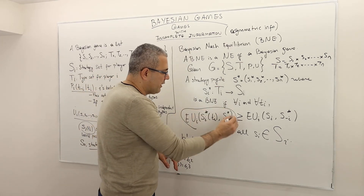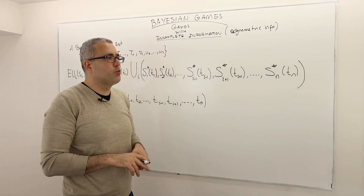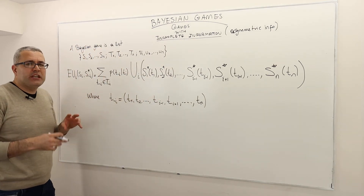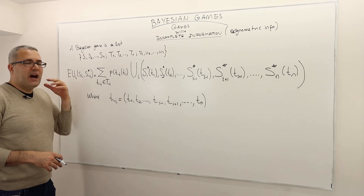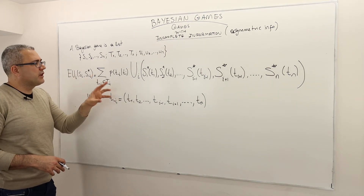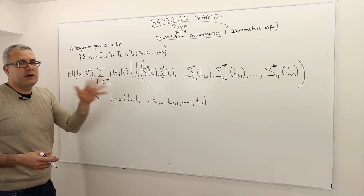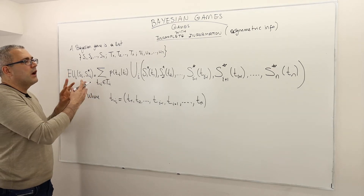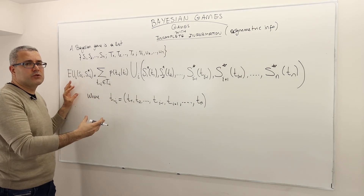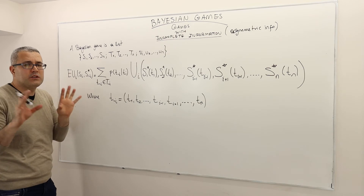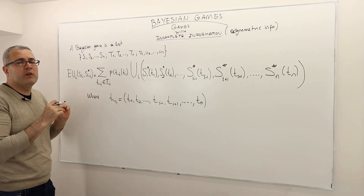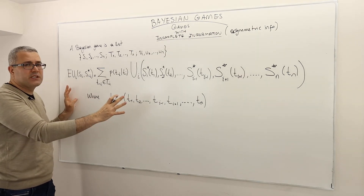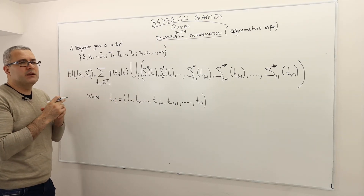An important question is: what is that expected payoff? Let me give you a generic formula for it. If you get this generic formula, your life is going to be very simple — though obviously it's not so easy and straightforward. Try to picture this formula in every exercise you solve. Once you solve an exercise, come back to this formula and see how it fits. This is how you can really understand it. Once you understand this, finding Bayesian Nash equilibrium is just a piece of cake.